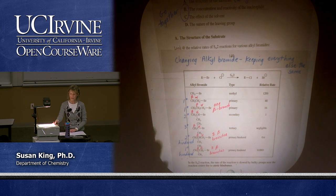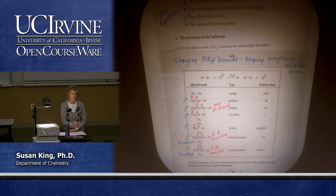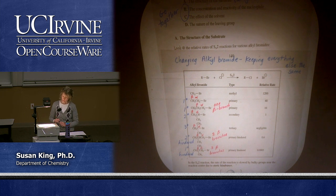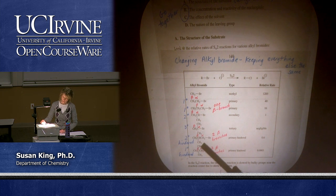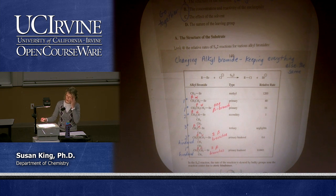Questions on this chart? Beta branching and moving from methyl to primary to secondary to tertiary slows the reaction down dramatically. I would certainly call the tertiary rate negligible, and the most hindered primaries are exceedingly slow.